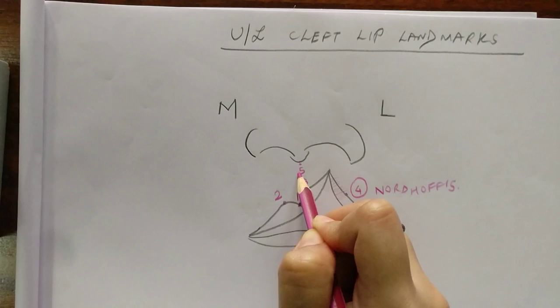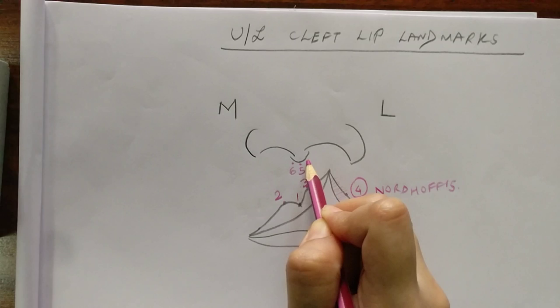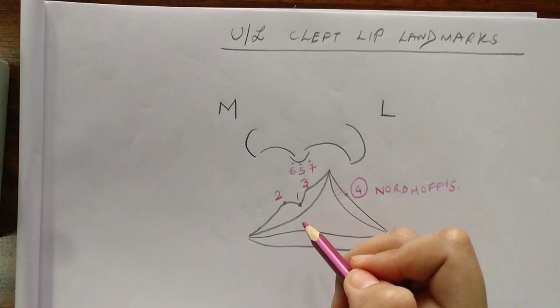Then comes point 5 which is the center of the base of the columella. Now point 6 is the base of the columella on the non-cleft side, and akin to that is point 7 which is the base of the columella on the cleft side.